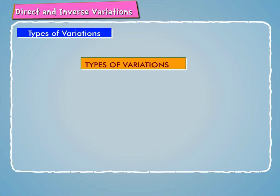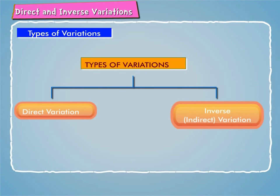Types of variations. There are two types of variations: direct variation and inverse (or indirect) variation.